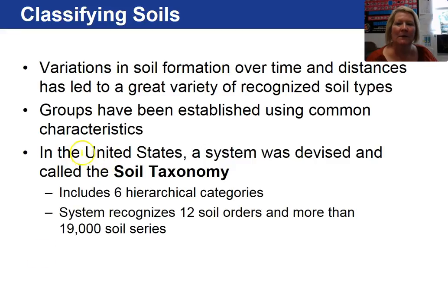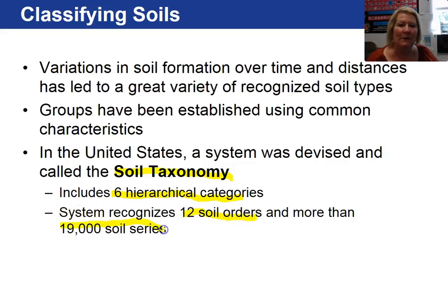In the United States there is a system called Soil Taxonomy, which includes 6 categories and 12 soil orders and more than 19,000 soil series. This is a very complex soil classification system.